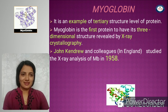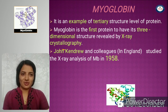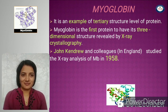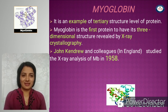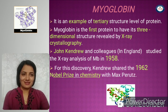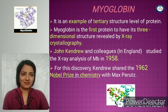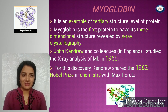Myoglobin is the first protein to have its three-dimensional structure revealed by X-ray crystallographic studies by John Kendrew and his colleagues. He performed the X-ray analysis in 1958, and for this discovery he got the Nobel Prize in Chemistry in 1962, shared with Max Perutz.